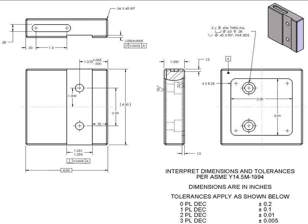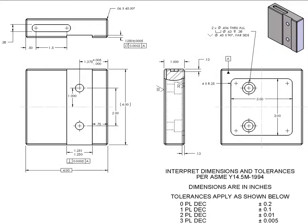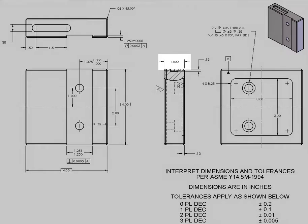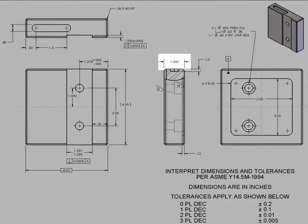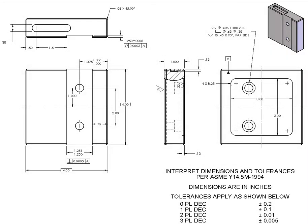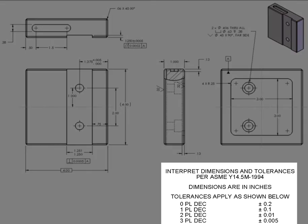Understanding tolerances on a part print is of critical importance. Drawings will typically include feature-specific tolerances such as this 1.251 to 1.250, and general tolerance features such as this 1.000. The general tolerance feature sizes are controlled by the tolerance table on the part drawing.